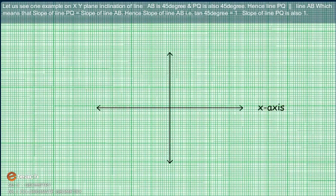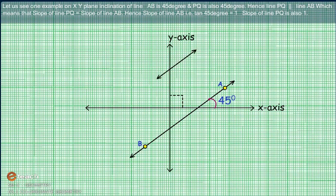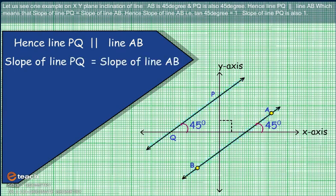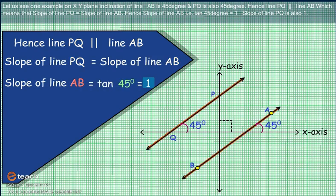Let us see one example on the XY plane. The inclination of line AB is 45 degrees, and PQ is also 45 degrees. Hence, line PQ is parallel to line AB, which means the slope of line PQ equals the slope of line AB. Therefore, slope of line AB equals tan(45°) equals 1, and slope of line PQ is also 1.